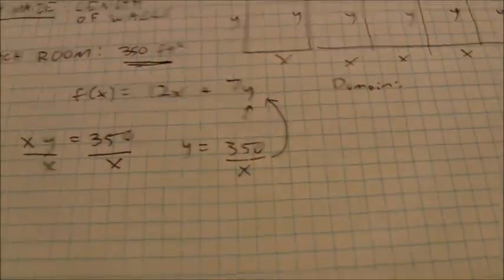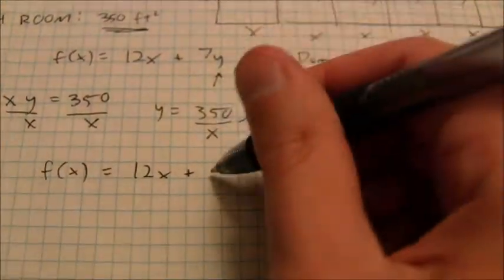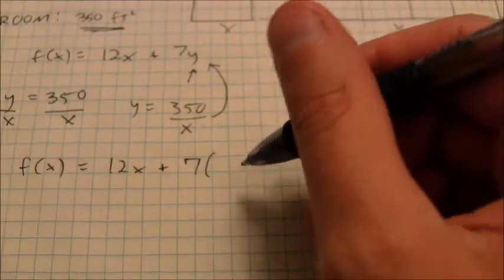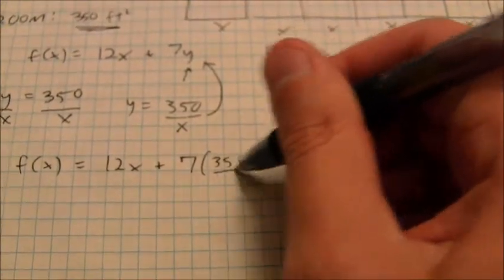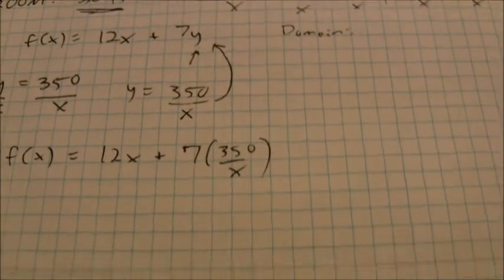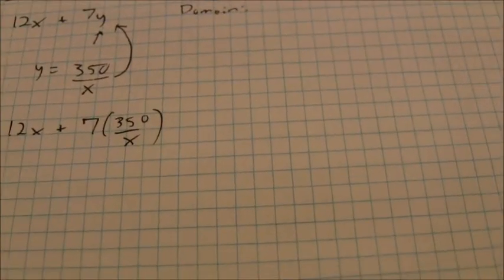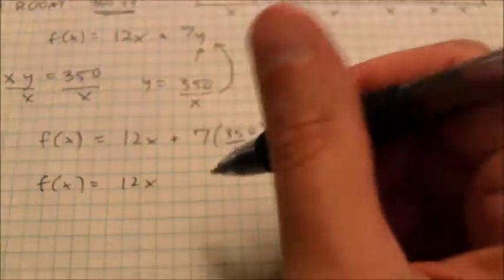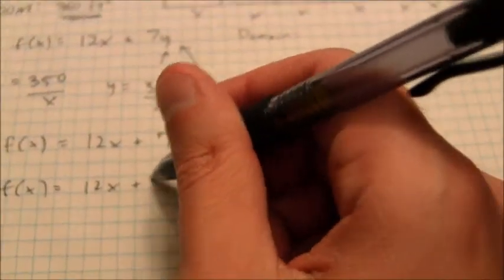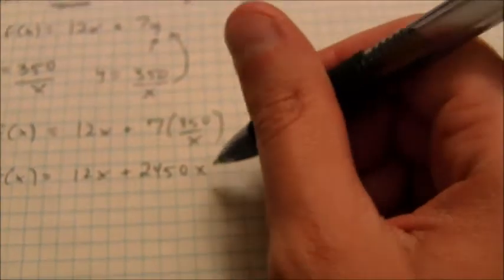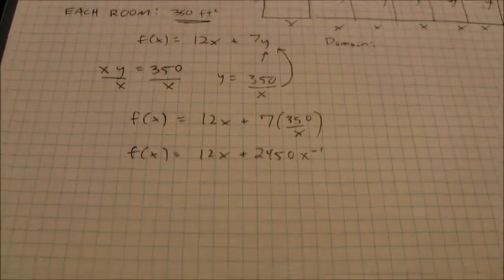That's what I'm going to replace in this equation up here. So, my new equation is f(x) equals 12x plus 7 times 350 over x. So, f(x) is equal to 12x plus 2450 x to the negative 1 power. I'm going to write it that way so I have something that's a little bit easier to work with.